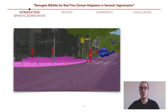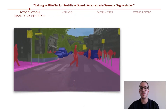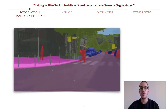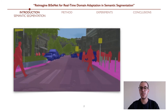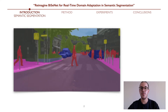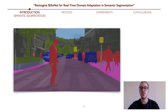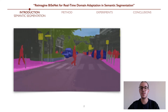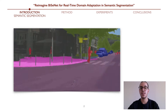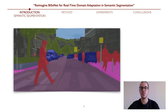Semantic segmentation corresponds to the task of correctly classifying each pixel of an image with its corresponding semantic class. Semantic segmentation is a fundamental technology in autonomous driving applications because it provides vehicles the information about their surroundings that is critical to safely navigate the environment.